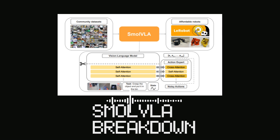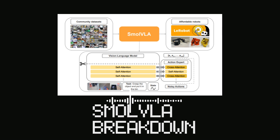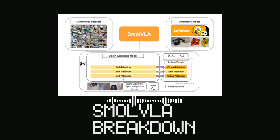What about the other main component — the one that actually does the actions? That's the action expert: a transformer architecture whose job is to predict a chunk of low-level actions from the features provided by the VLM. It's where the robot's movements and manipulations are generated. Unlike some prior VLA architectures that stick to just self-attention or cross-attention, SmolVLA's action expert interleaves both. Cross-attention layers handle the VLM's keys and values, while self-attention layers allow action tokens to attend to each other — improving success rates, inference time, and producing smoother action chunks.